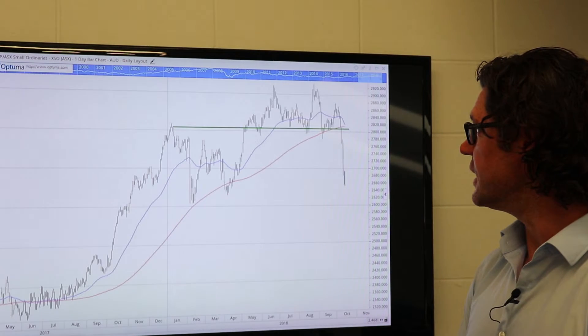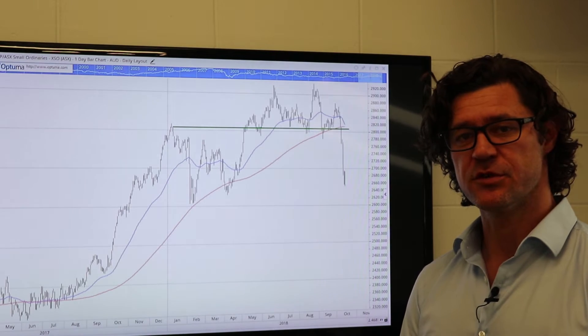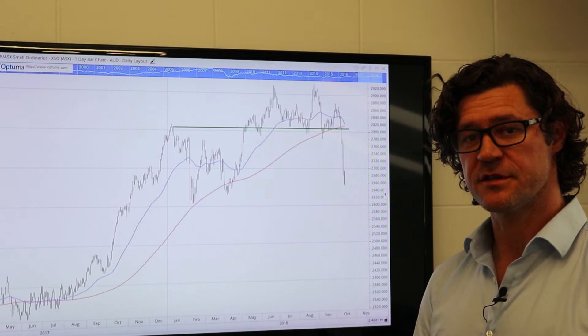In support of that, the next chart is of the small ordinaries, which just shows the performance of the smaller stocks on the ASX.